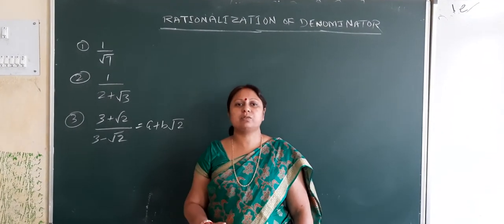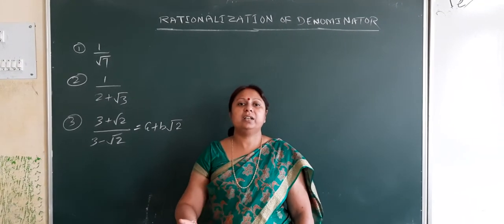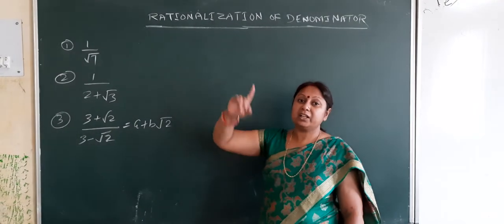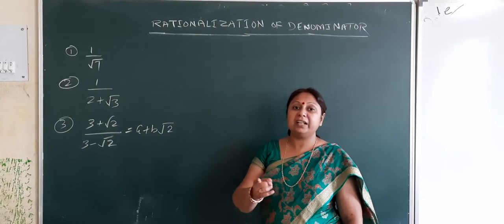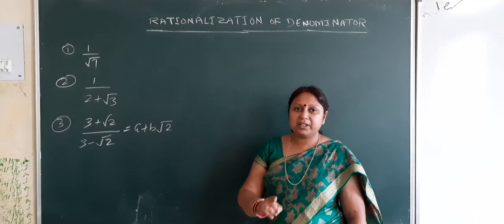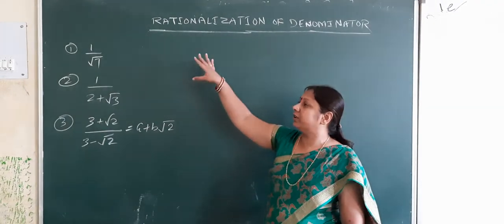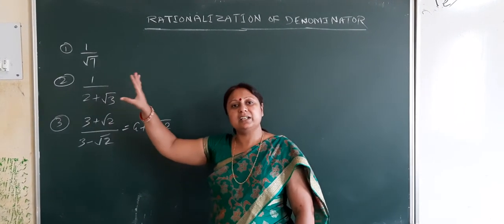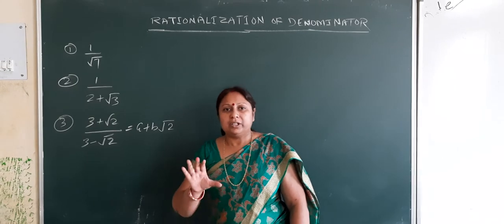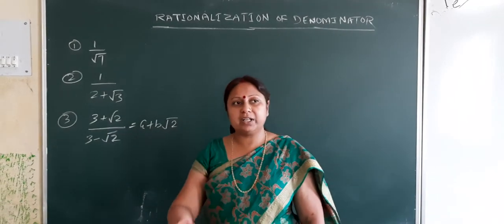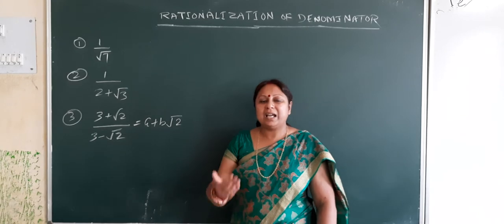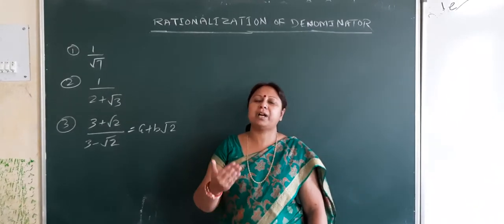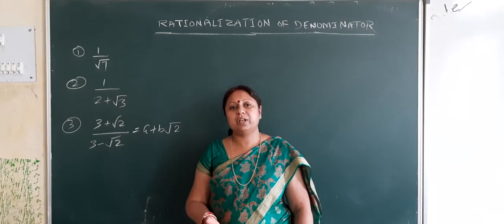We need to rationalize the denominator if the denominator is an irrational number. When the denominator is an irrational number, only then we have to rationalize it. Rationalization is the process to convert an irrational denominator into a rational number by multiplying and dividing by a suitable number.